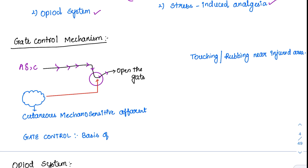Touching or rubbing near the injured area is significant. Whenever you touch a painful stimulus, you shake your hand or rub around the region — not directly over it, as that causes severe pain. When you rub around the region, it activates the A-alpha and A-beta fibres, which are mechanosensitive receptors.